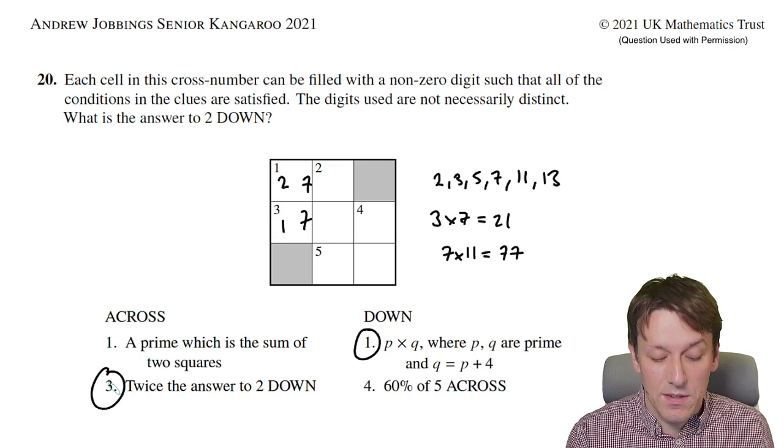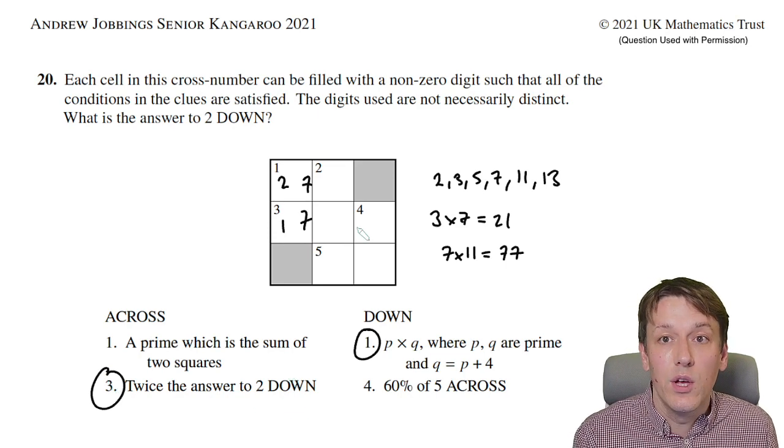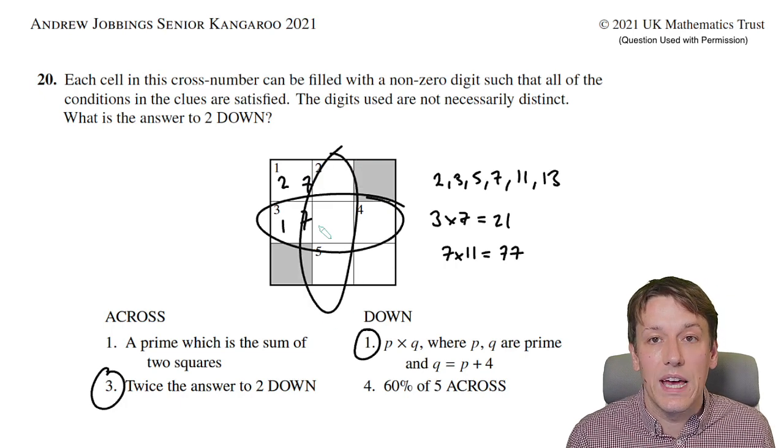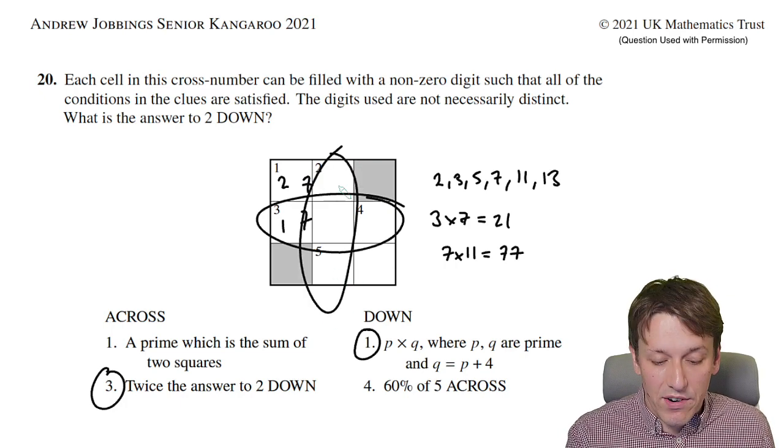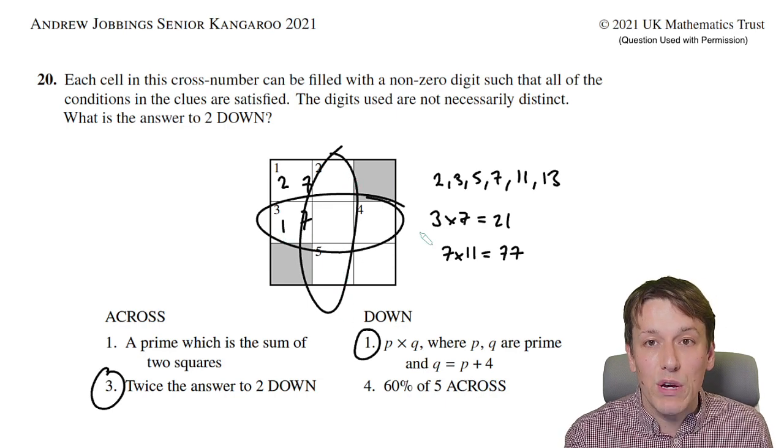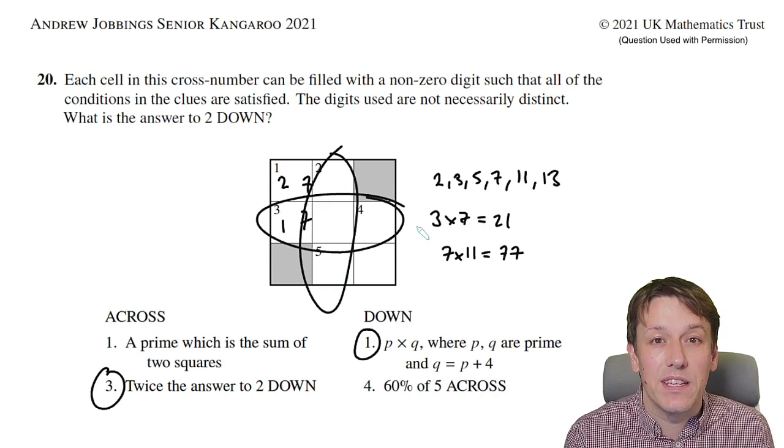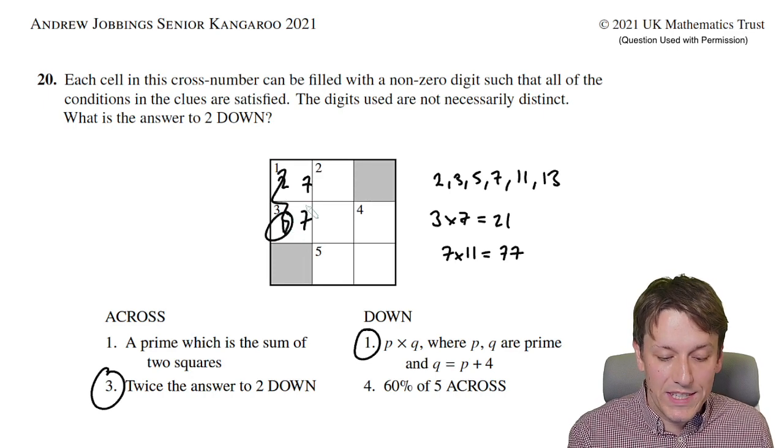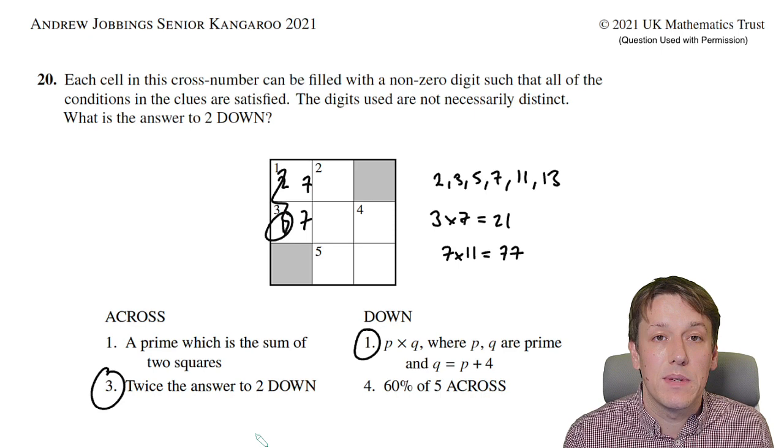But notice that three across has to be twice the answer to two down. None of the digits are zero, so this is a three-digit number, at least 100 and something. So three across has to be at least 200 and something to be double that. That means this first digit can't be a one, so 21 is out and one down must be 77.